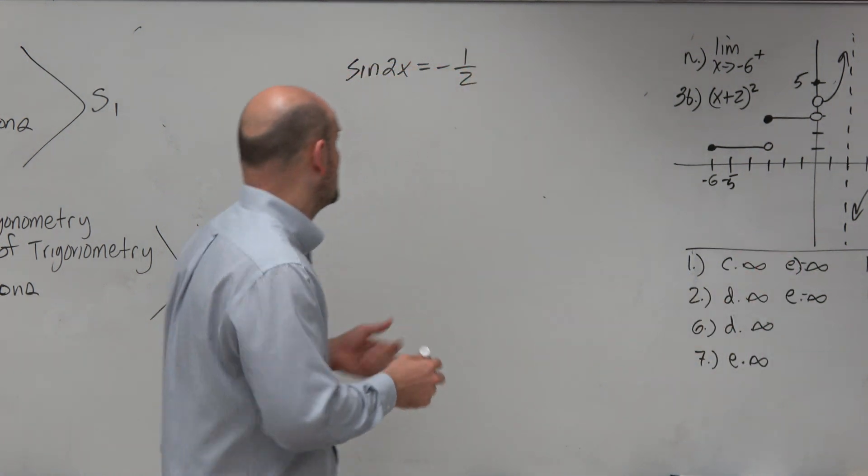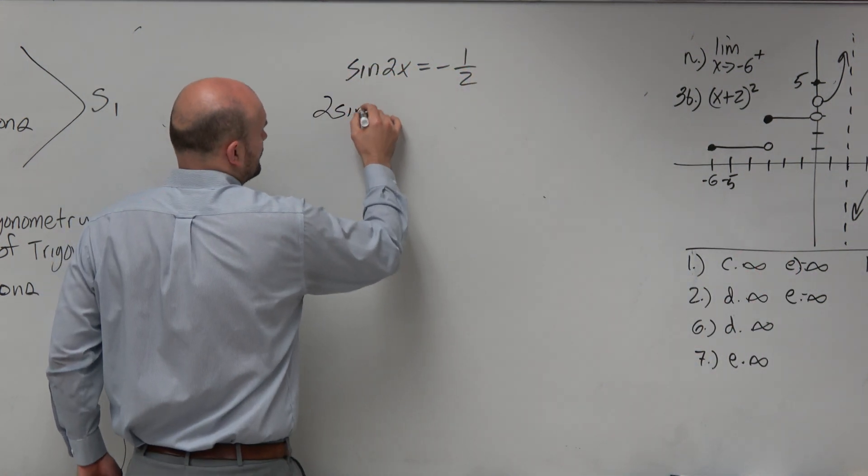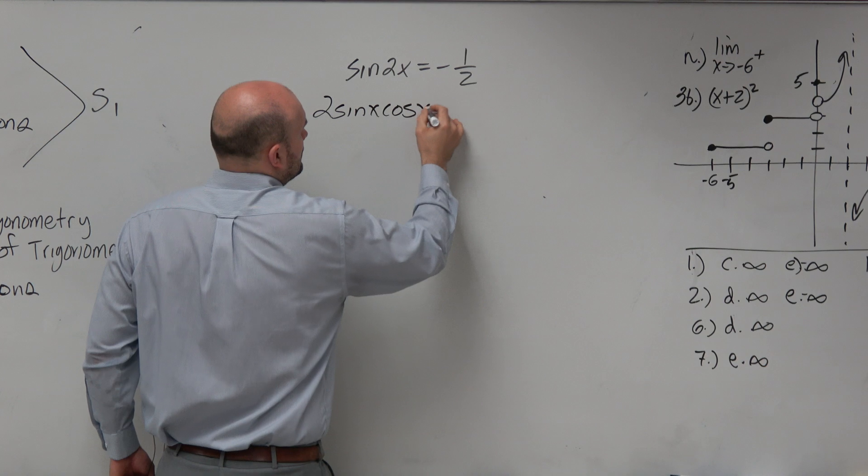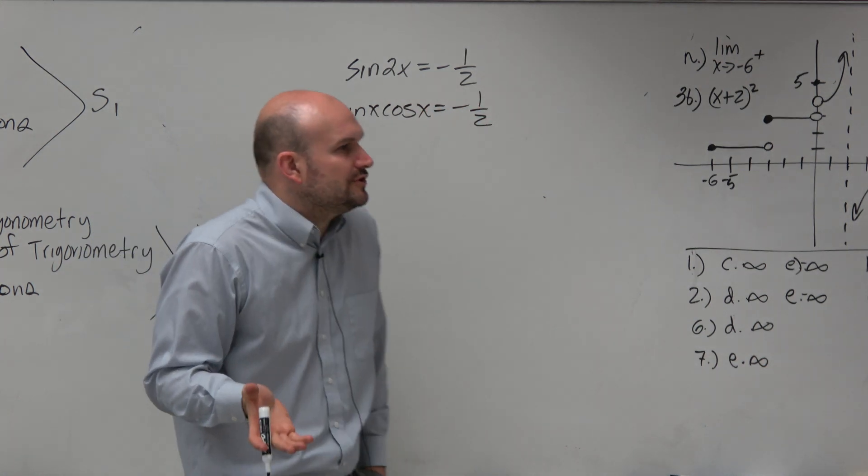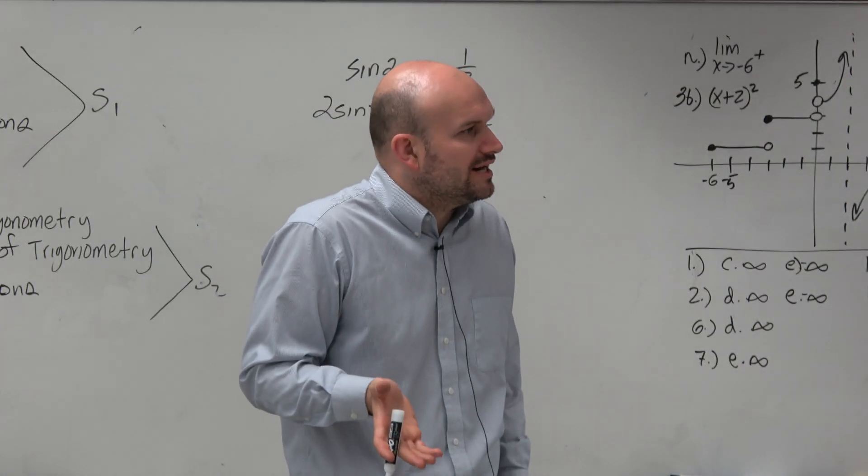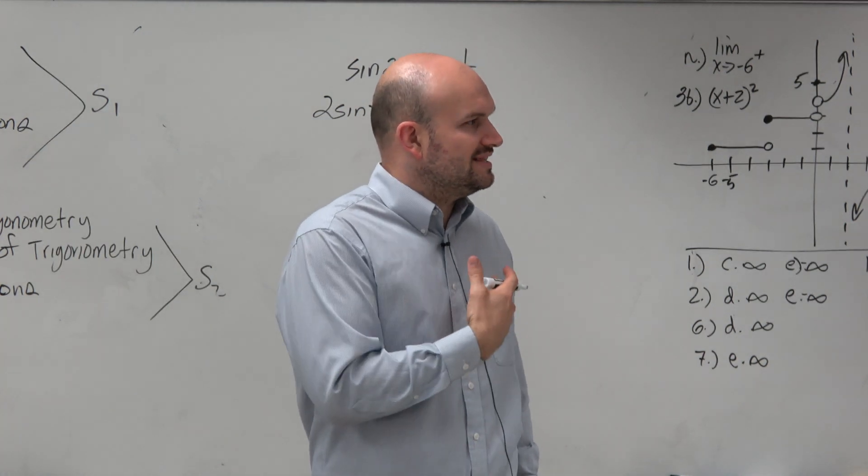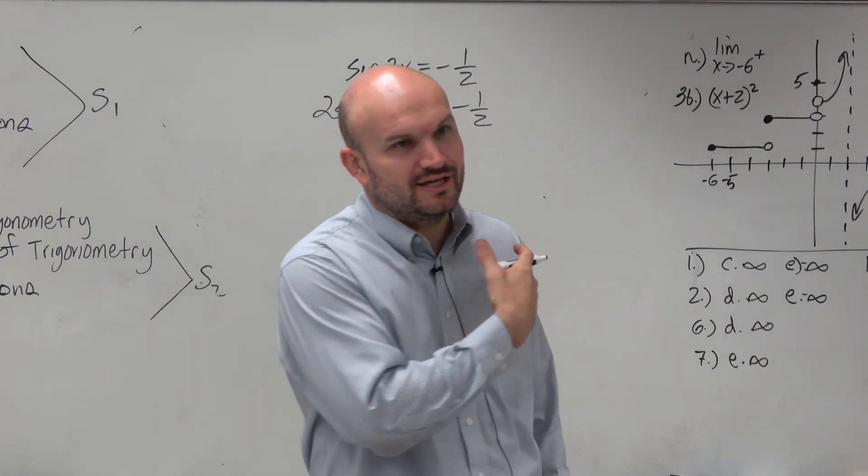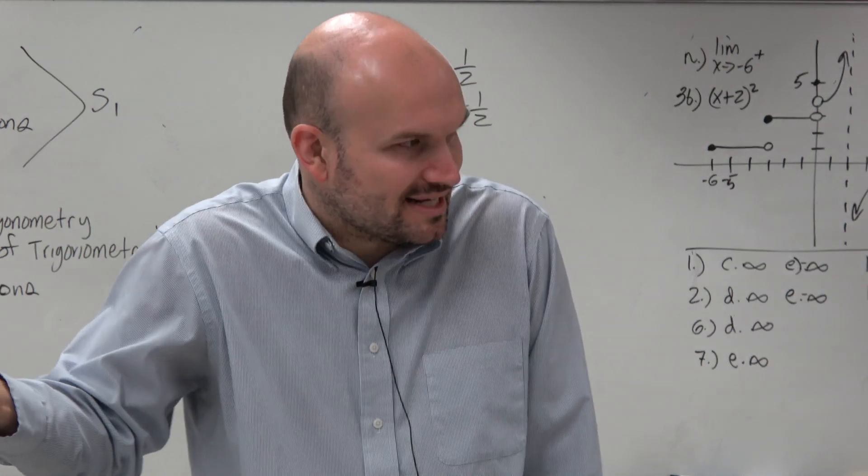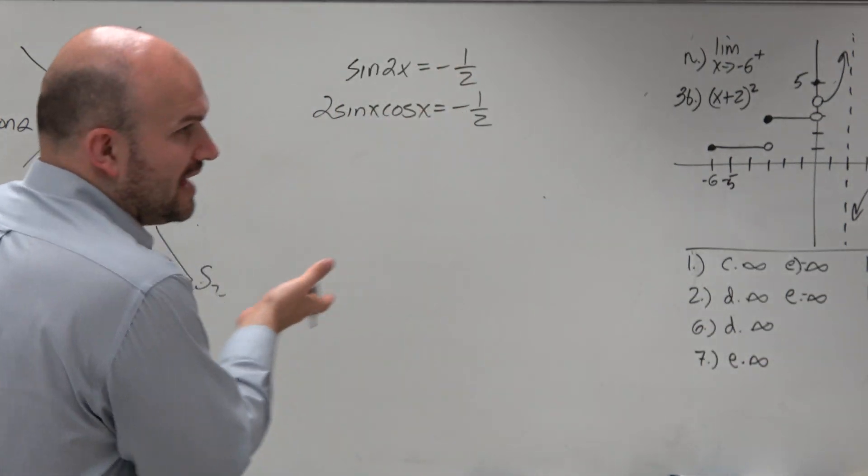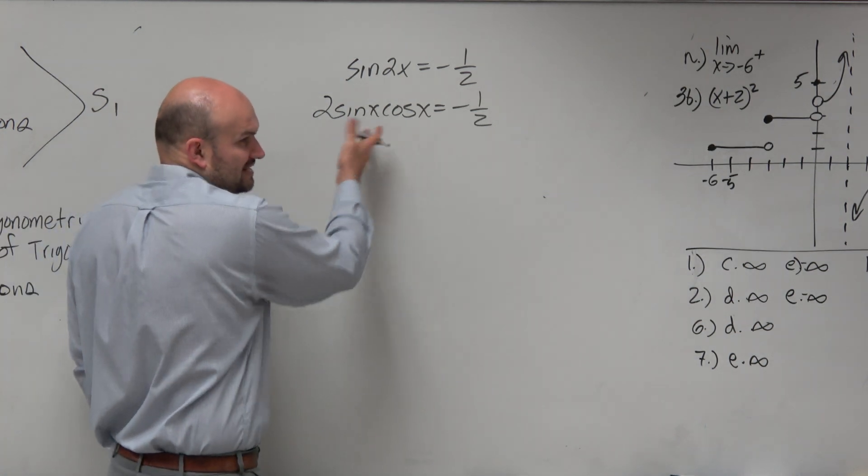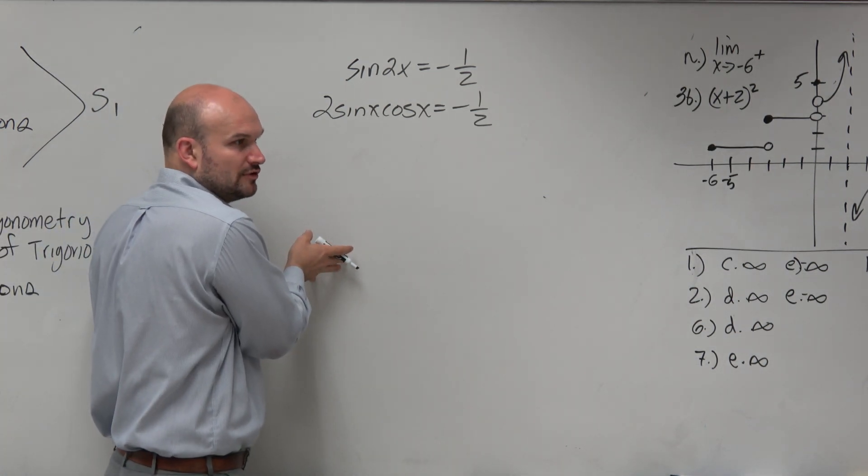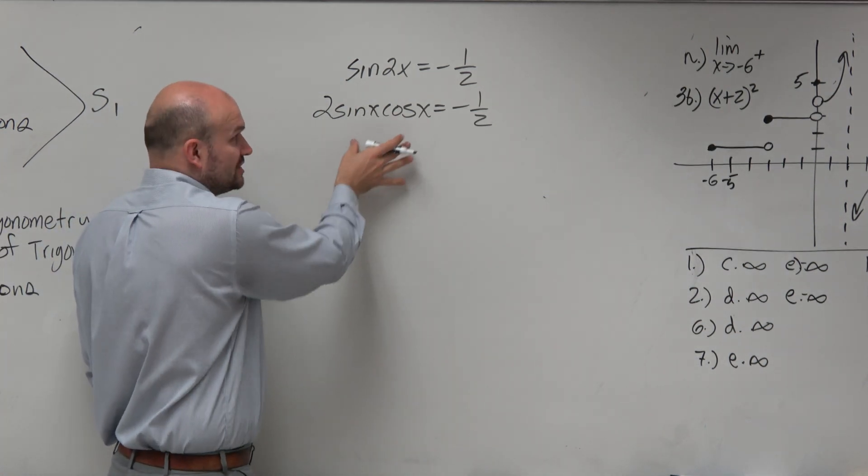So a lot of you guys would look at this one and say, okay, let's use the double angle formula. But the problem is, now what are you going to do? You can't apply the zero product property because you don't have anything equal to zero, right? And if you add it to the other side to get zero, then you don't have a product anymore. So if we apply the double angle formula, it kind of takes us to a dead end at this point, at least from what we've learned. So this is not actually going to be helping us.